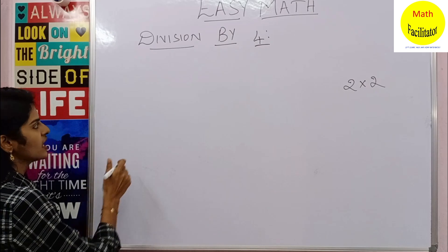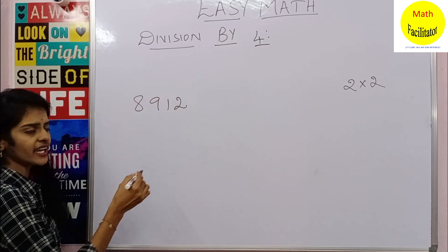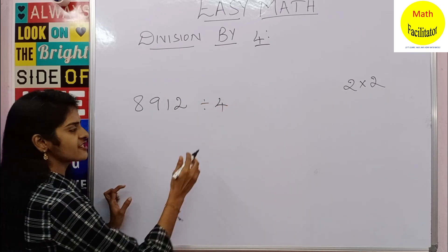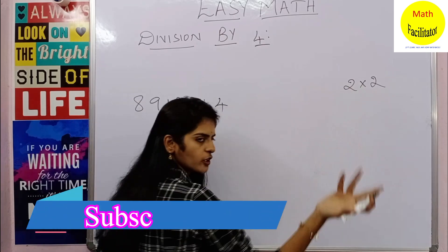And now let us discuss about four. So now let me take a number 8912 divided by four. So nothing but instead of dividing one time by four, I'll divide two times by two, okay? Since four is nothing but two into two.